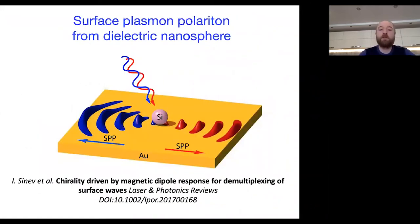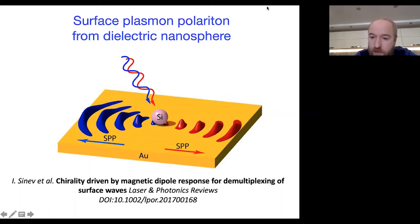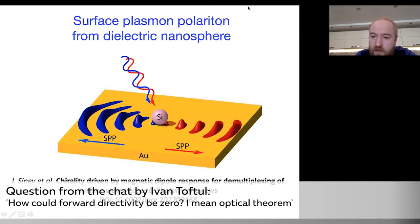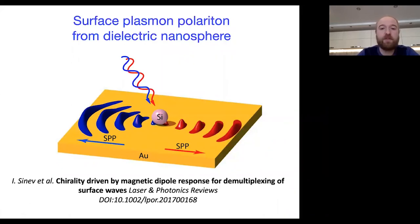This is the main idea of the demultiplexer. If the incident wave contains two different wavelengths, and the nano-antenna is tuned so that for one wavelength it realizes forward scattering and for the second wavelength backward scattering, then incident light containing these two wavelengths will excite SPP in opposite directions — achieving demultiplexing with a single nanoparticle. A question: how can forward directivity be zero given the optical theorem? In this 2D case the optical theorem doesn't work the same way — this is a key difference from 3D. In the dipole approximation it is possible to completely cancel forward or backward directivity.